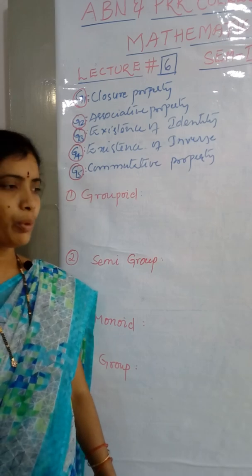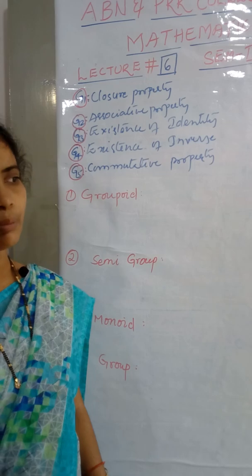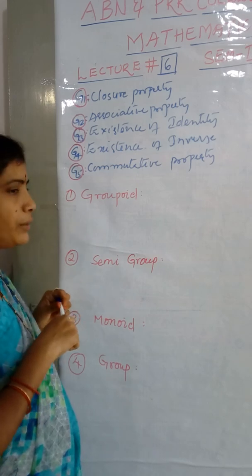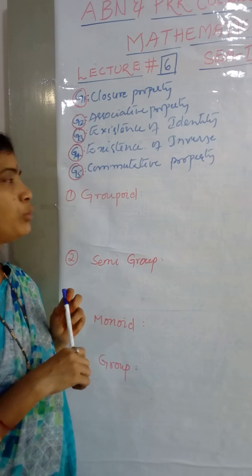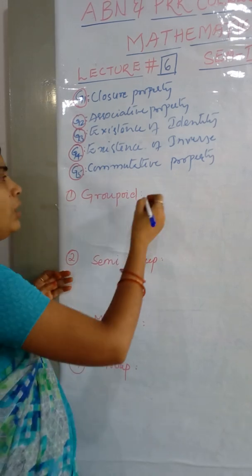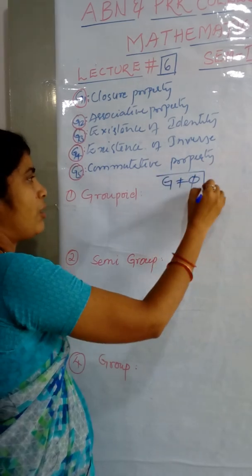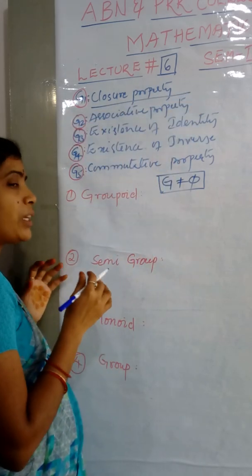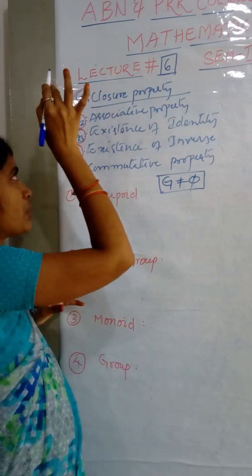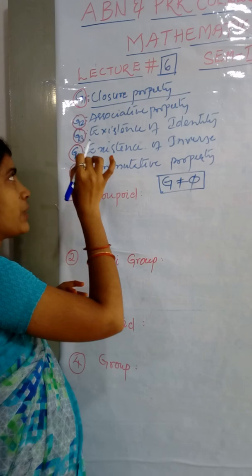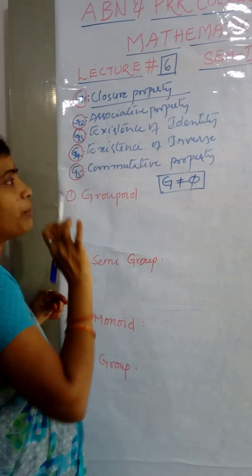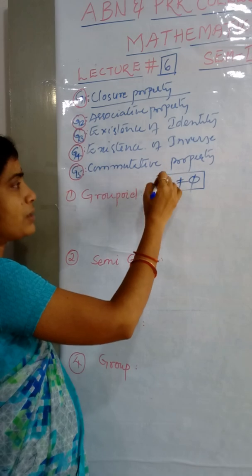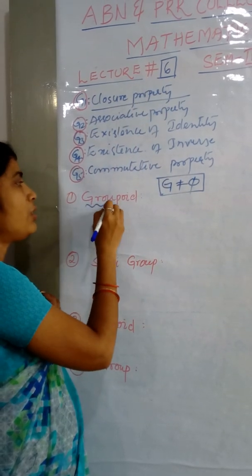Let us discuss very important tasks about groups, that is special definitions. Number one is a groupoid. What is a groupoid? Which non-empty set is called a groupoid? Every time we have to consider a non-empty set G. If this set holds the first property, that is closure property, then the set is called groupoid.